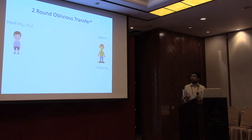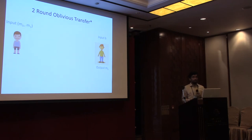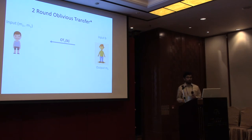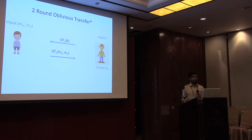This is where the notion of oblivious transfer comes into the picture. In oblivious transfer, there's a sender with two inputs M0 and M1, and a receiver with input bit b. We want a two-round OT: the receiver first sends some message, the sender sends back a response, and at the end the receiver learns Mb. The security requirement is that the sender should not learn the bit b, and the receiver should not learn M_{1-b}.